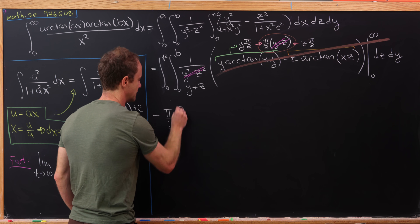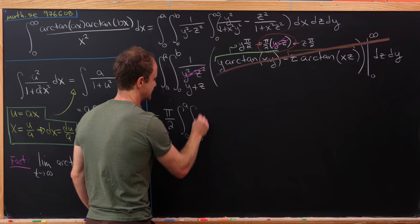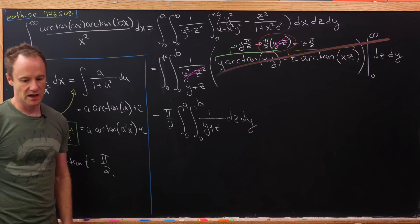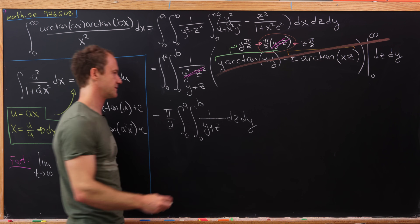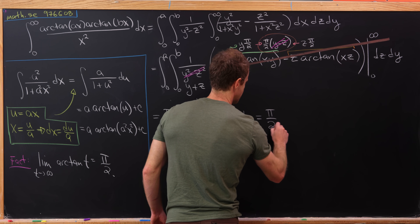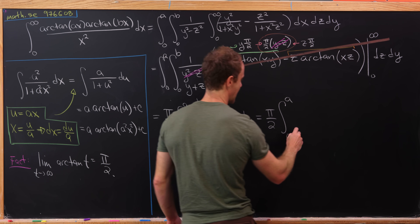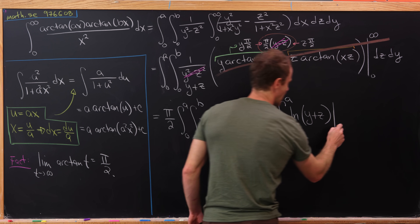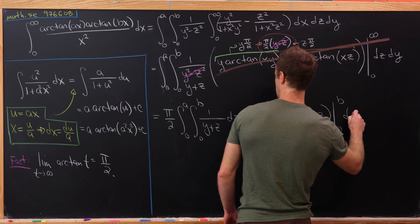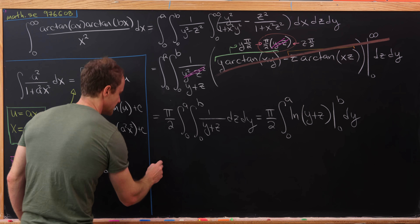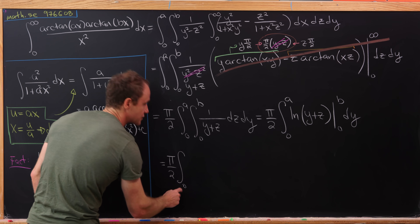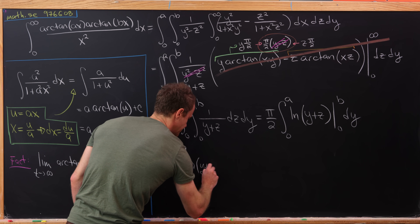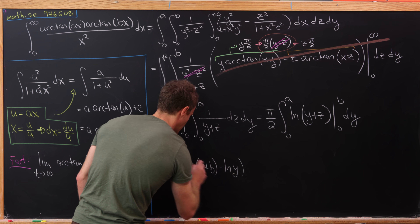So we have pi over 2 times the integral from 0 to a, integral from 0 to b, of 1 over (y plus z), dz dy. It's a fairly straightforward double integral. We get pi over 2 times the integral from 0 to a of the natural log of (y plus z) evaluated from 0 to b, dy — which gives pi over 2 times the integral from 0 to a of (log(y plus b) minus log(y)) dy.